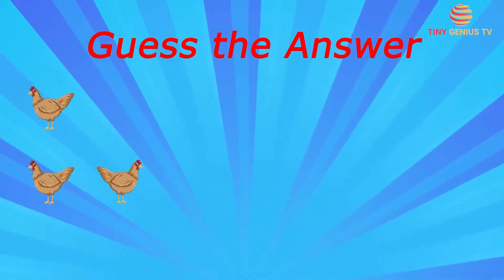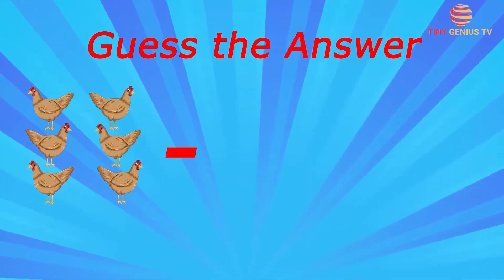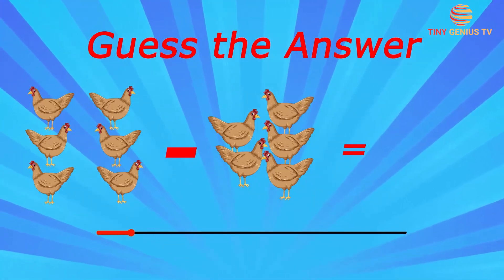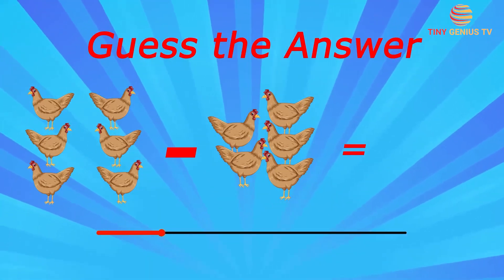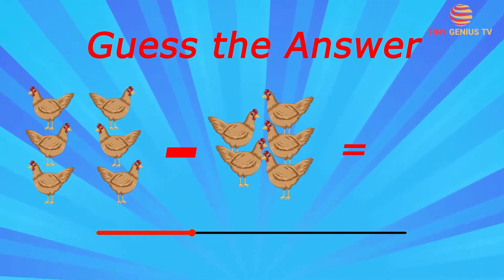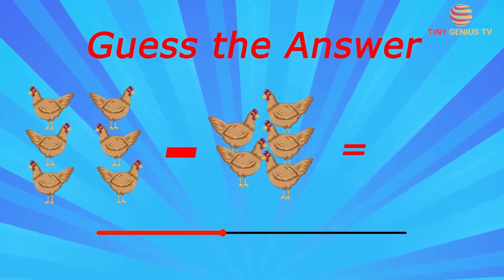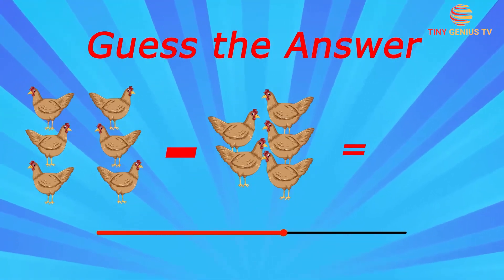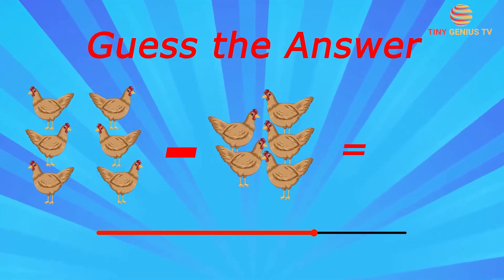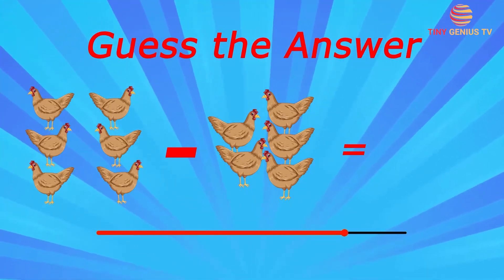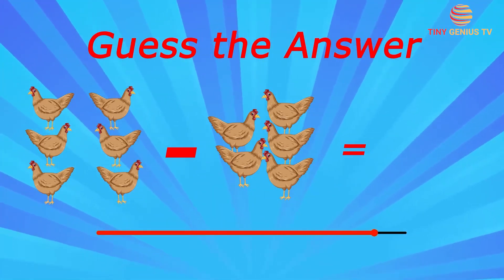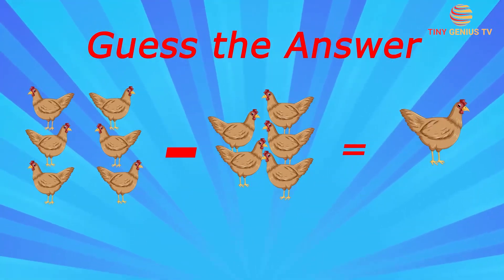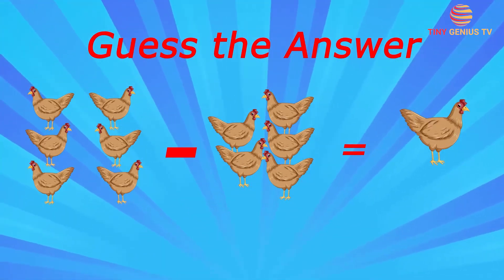A flock of six chickens are eating their food. Five of them finished eating. Now how many are still eating? Only one chicken is eating.